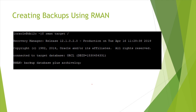To connect to RMAN, run 'rman target /'. RMAN will return a message like 'connected to target database' along with the database name and database ID. The main command to take a backup is 'backup'. To back up your database, run 'backup database'. Without specifying type, the default backup type is a full backup stored as a backup set.